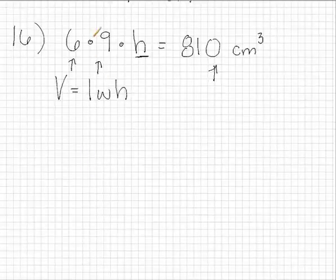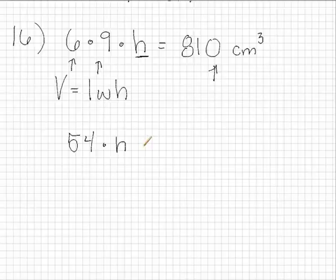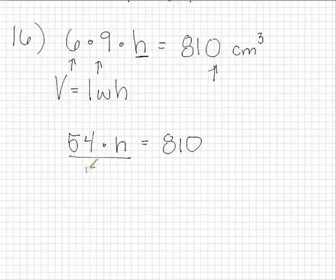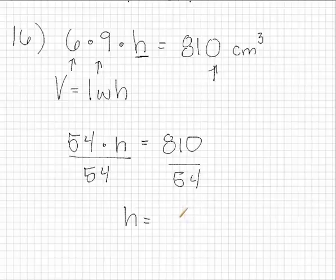Let's go ahead and simplify on the left hand side. 6 times 9 is 54. We still don't know what h is. That's what we're solving for. The right hand side will stay the same. To solve for h we're going to divide both sides by 54 to get that h equals 15.